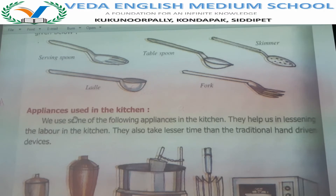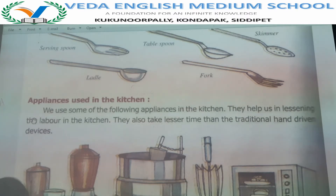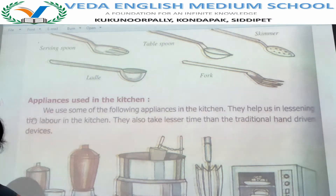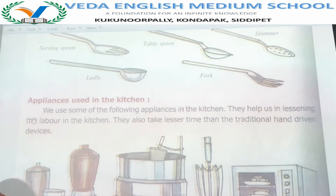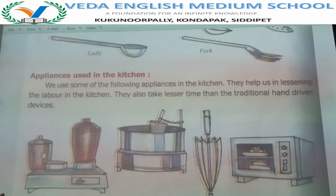What are the appliances used in the kitchen? In the old days, people used a mortar and pestle and a wet grinding stone to grind food items and flours. These were all hand-driven things. But nowadays, so many electrical appliances are available to reduce the work in the kitchen, such as a mixy grinder — which is an electric mixer and grinder.